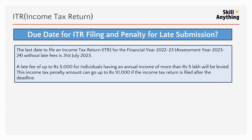Due date of ITR filing: The due date without a late fee is 31st July. For financial year 2022–23, the due date is 31st July 2023. Every year the due date is 31st July — it may be changed by the income tax department, but the standard fixed date is 31st July.